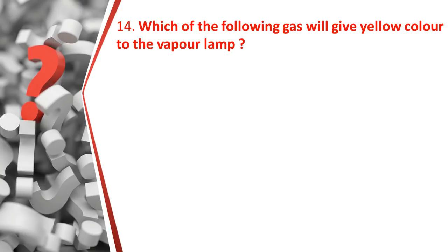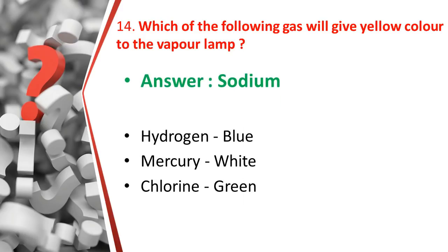The fourteenth question: which gas gives yellow color to a vapor lamp? The answer is sodium. Related facts: hydrogen gives blue color, mercury gives white color, and chlorine gives green color. So sodium gives yellow color to a vapor lamp.